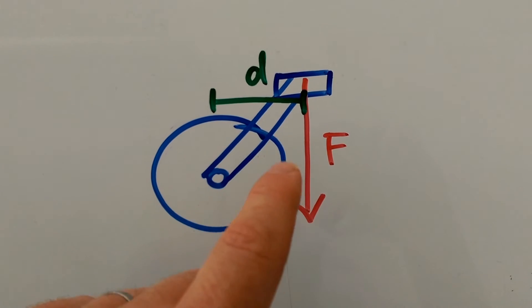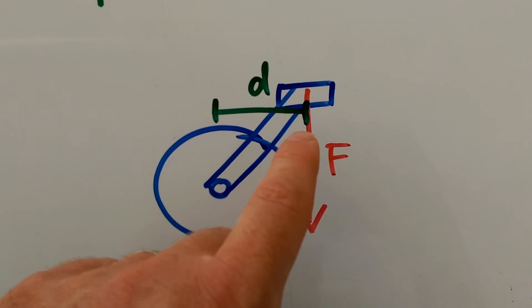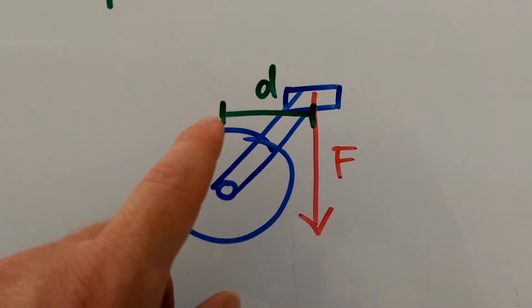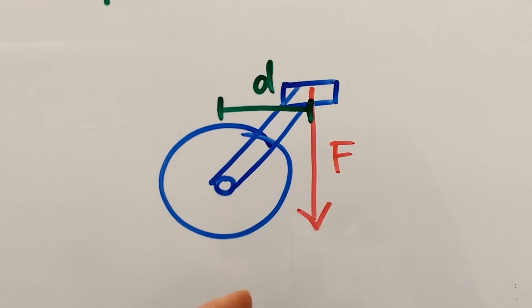It's a very important thing to understand. And that right angle, that means, that perpendicular distance means that the distance is at right angles to the line of action of the force.